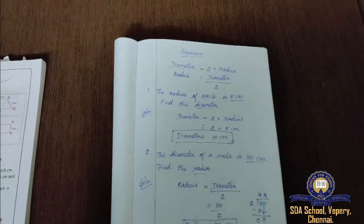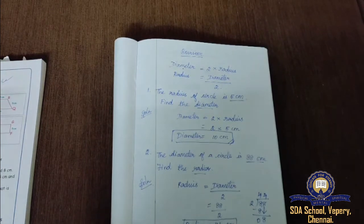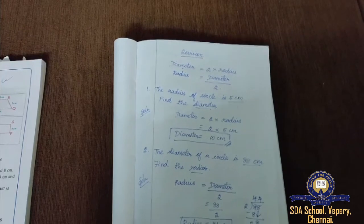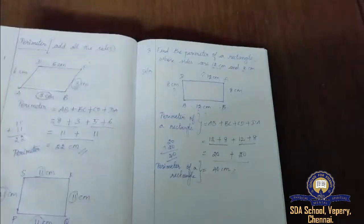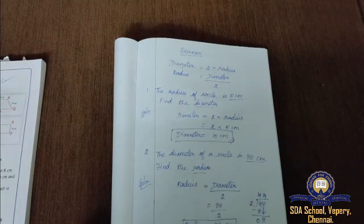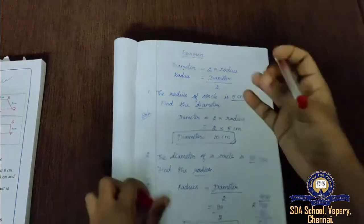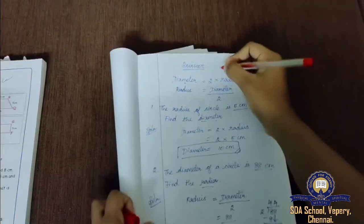Hello students. In the previous zoom class we revised a few sums from chapter 1. So in this class we are going to revise both chapters — chapter 1 and chapter 2.